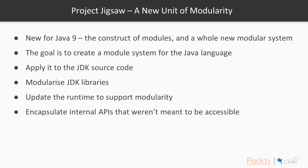Project Jigsaw is trying to give us a new unit of modularity. It introduces the construct of modules and a whole new modular system for the Java programming language, brand new for Java 9. The goal is to create a module system that solves the problems illustrated when talking about JAR hell. Although the interface it gives us is fairly small, the Java development team have applied it to the entire JDK source code, which is enormous. Oracle have modularized the entire Java development kit and all of its libraries and dependencies, which is an absolutely enormous task.